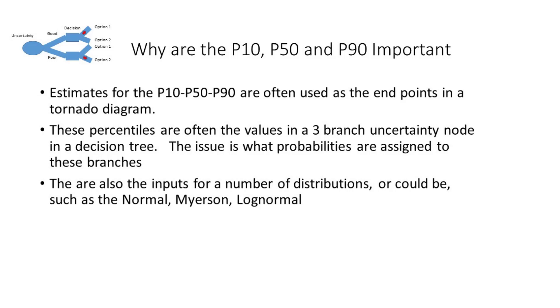And then often these percentiles are the values in a three-branch uncertainty node in a decision tree. That's the way I learned it anyway. You got three branches for uncertainty with these percentiles, and then the issue becomes what probabilities to assign to those branches.